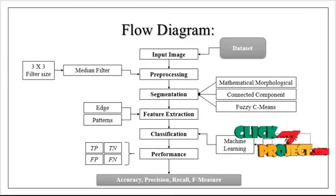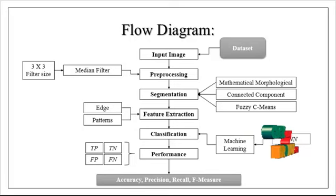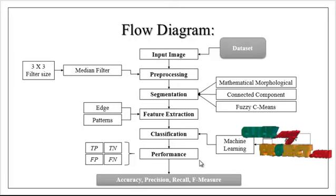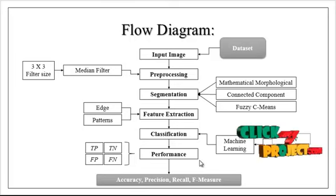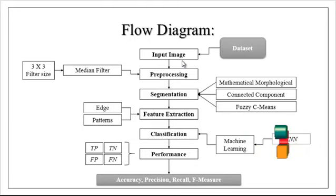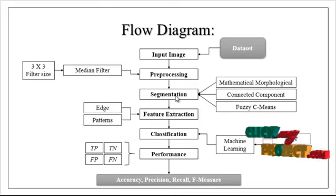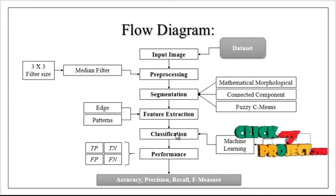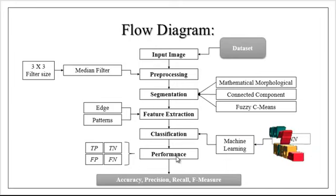Now we are going to discuss the flow diagram of the process. This is the overall working flow present in this project. This project consists of the following modules: input image, preprocessing, segmentation, feature extraction, classification, and performance estimation.